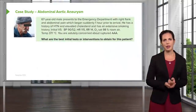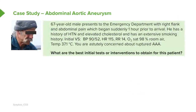We'll start with a case study. This is a 67-year-old male presenting to the emergency department with right flank and abdominal pain, which began suddenly about one hour prior to his arrival. He has a history of hypertension and elevated cholesterol, and also has an extensive smoking history. His initial vital signs concern you: blood pressure is 90 over 52, heart rate is 115, respiratory rate of 14, and oxygen saturation is 98% on room air.